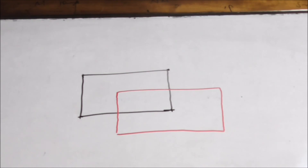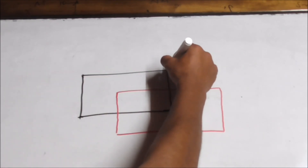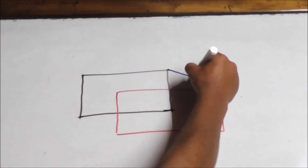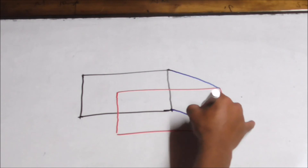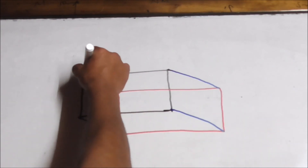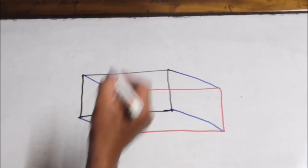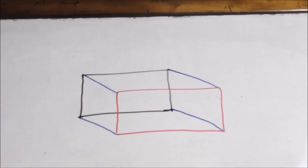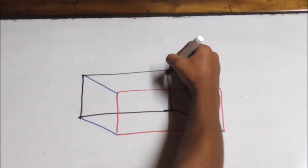If you join the one in blue, you join the blue lines together. If you join the blue, you can use the blue to complete the shape.